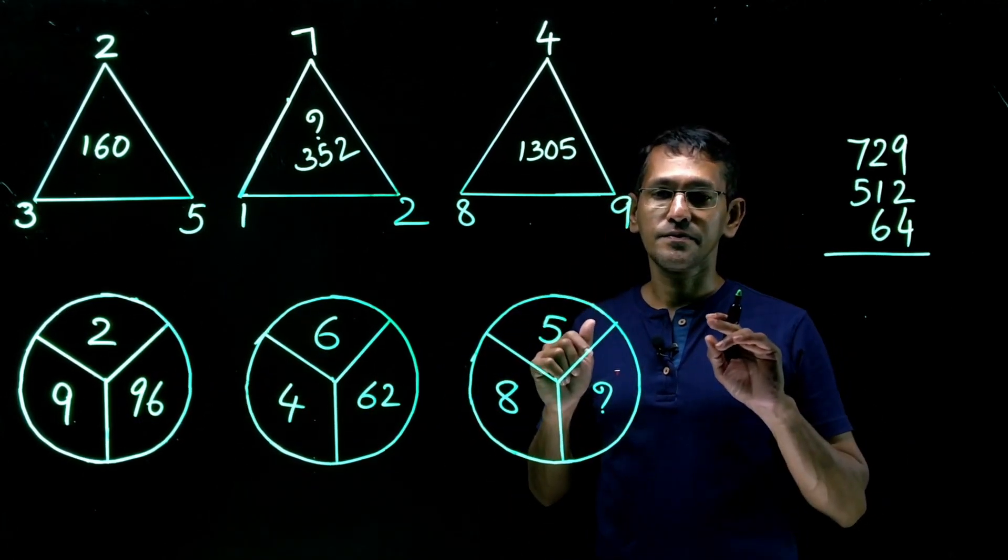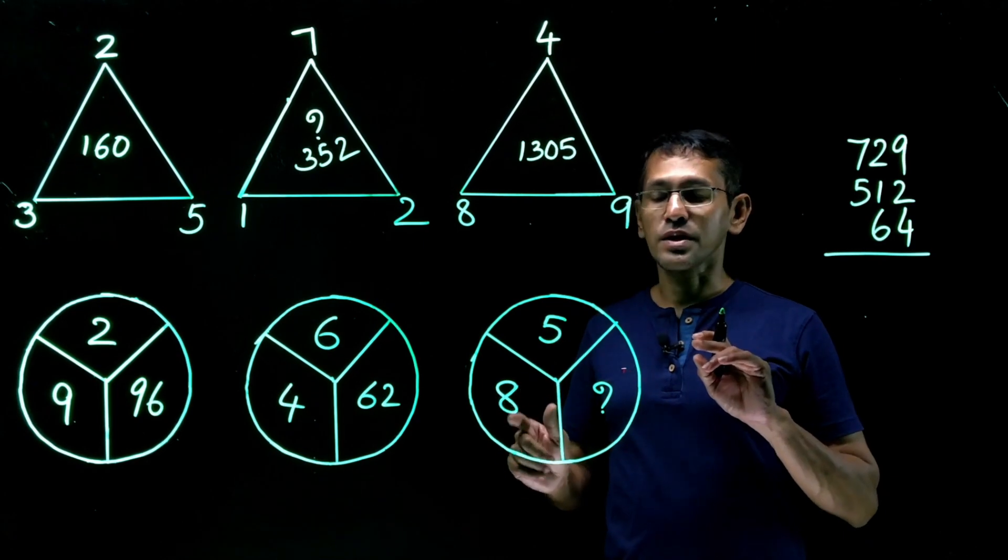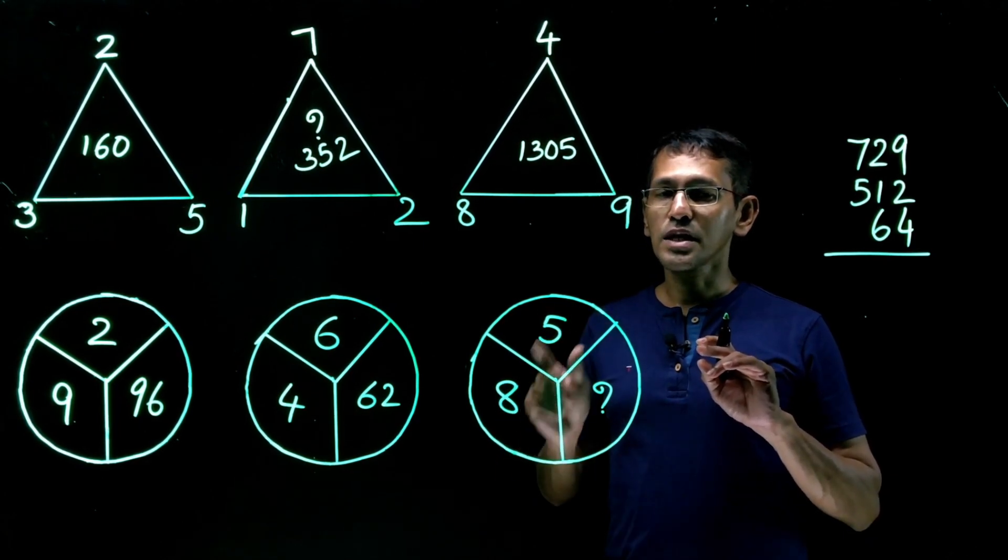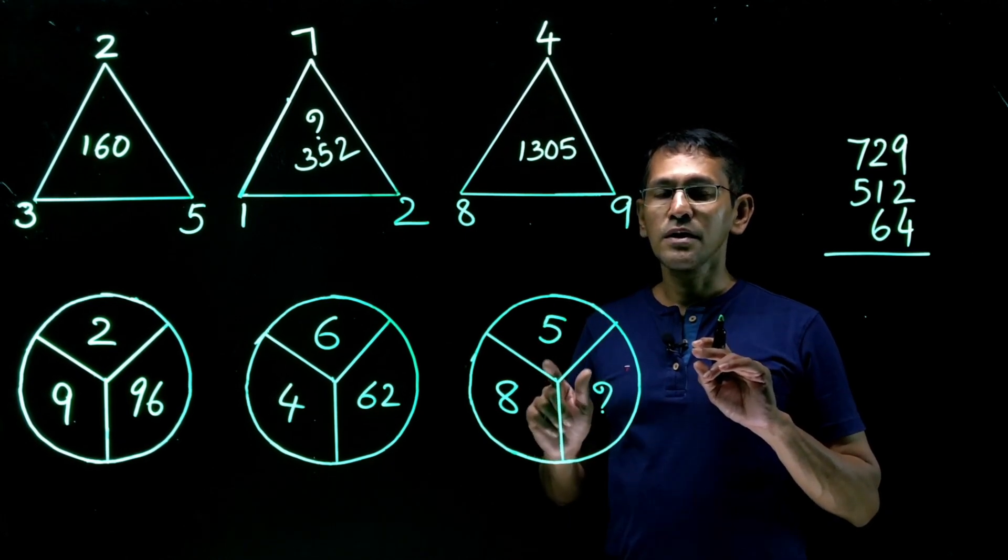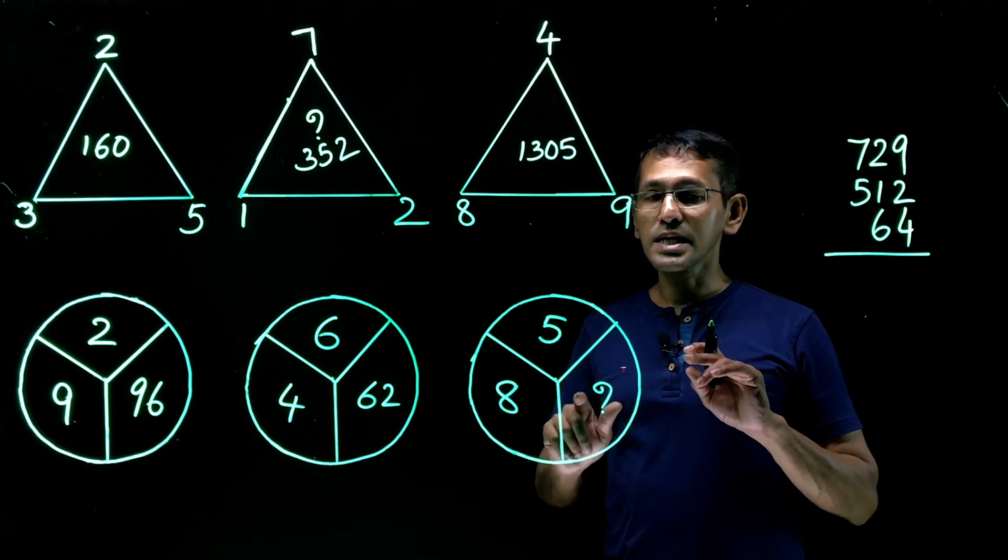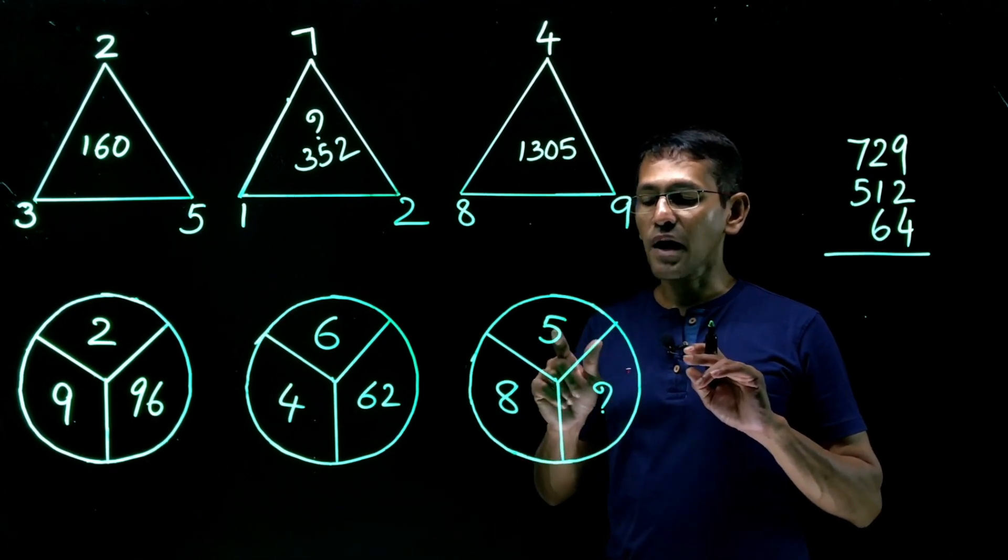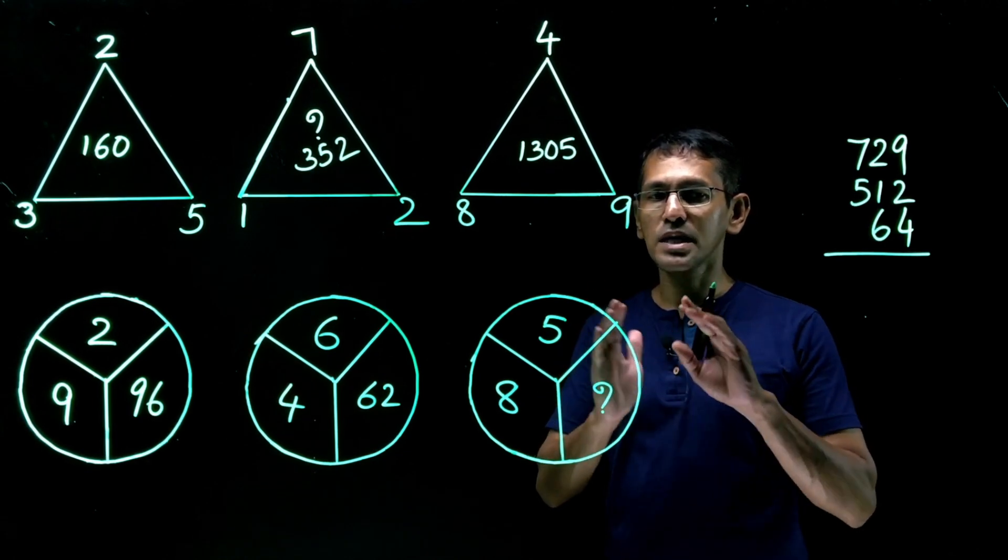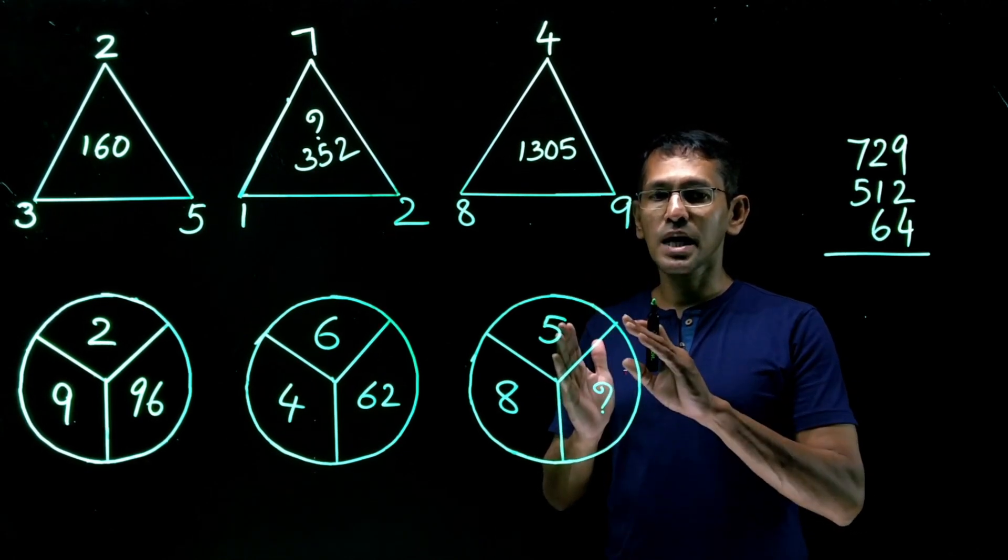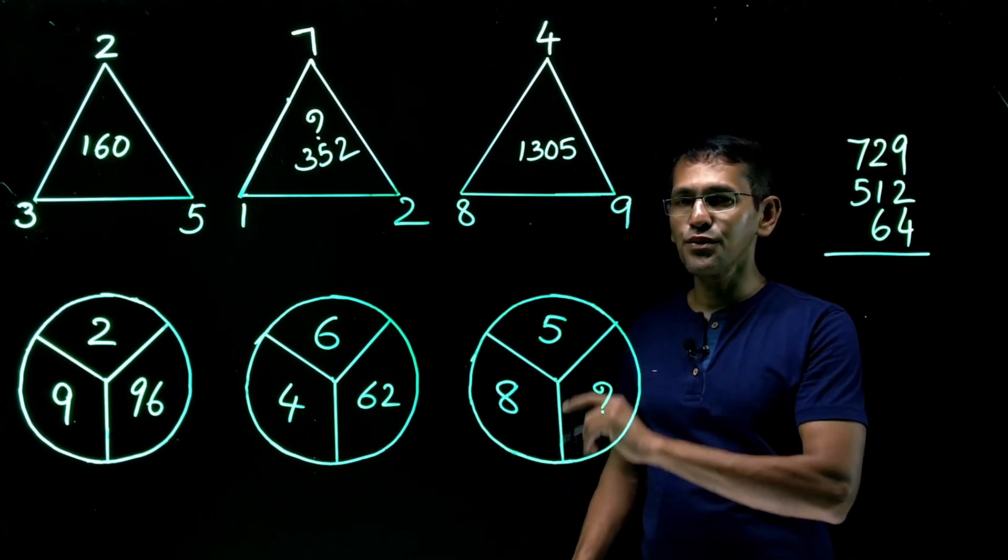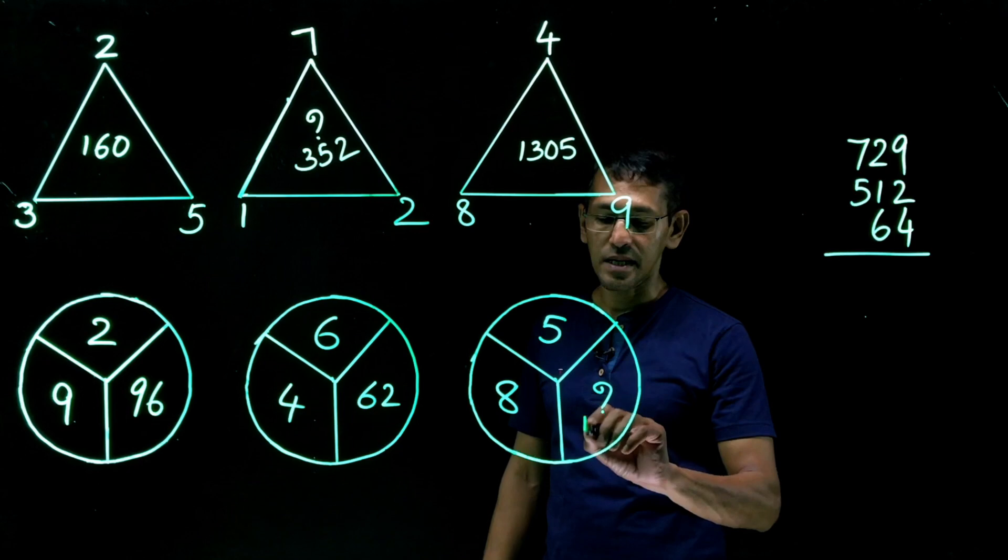The first one. 9 square plus 2 square is 85 and this is 96. 85 and 96, what's the difference? 11. Where did that 11 come from? 9 plus 2, 11. Now we got the pattern. Let's try with this question. 8 square plus 5 square, that is 64 plus 25, 89. That 89 plus 8 plus 5, 13. 89 plus 13, 89 plus 10, 99. 99 plus 3, 102. So 102 would be the answer here.